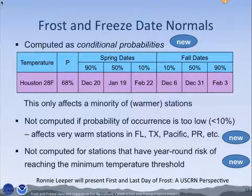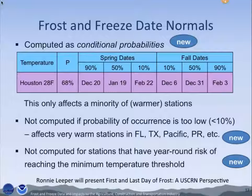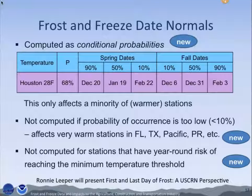For a station like Mount Washington in New Hampshire — before we would actually just produce dates, whatever came out, and it could be really close to August 1st or July 31st, and you'd think: what do I do with that information? Now what we do is, if it's just too cold of a station, we say there's year-round risk of freeze — don't bother trying to plant anything, basically.